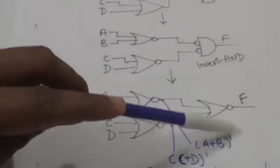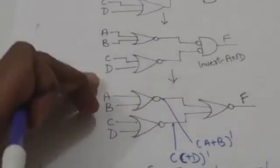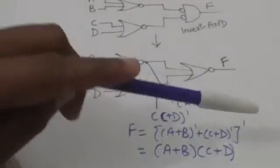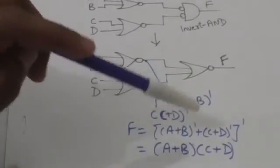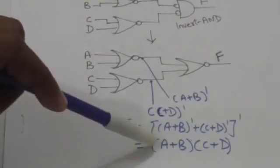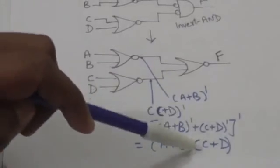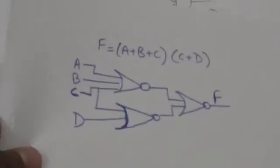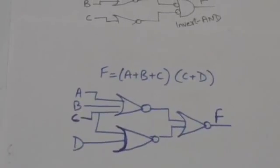In this way we can implement a function expressed in product of sums form by NOR gates. The output of the first NOR gate would be the complement of A plus B, and the output of the second NOR gate would be the complement of C plus D. The output of the final NOR gate would be the complement of [complement of (A+B)] OR [complement of (C+D)], which by De Morgan's theorem equals A plus B AND-ed with C plus D. So if the function is expressed in product of sums form, we can directly implement it by NOR gates.